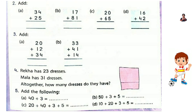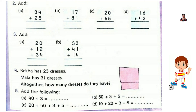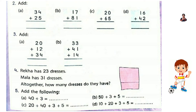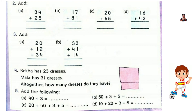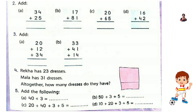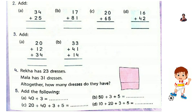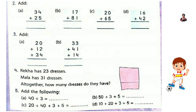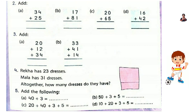Here in the third question, A: you can see 3 numbers — 20 plus 12 plus 34. First in the 1's place: 0, 2, and 4. 4 plus 1 plus 2 plus 0 is 6. And in the 10's place: 3 plus 1 plus 2 is 6. So the answer is 66.